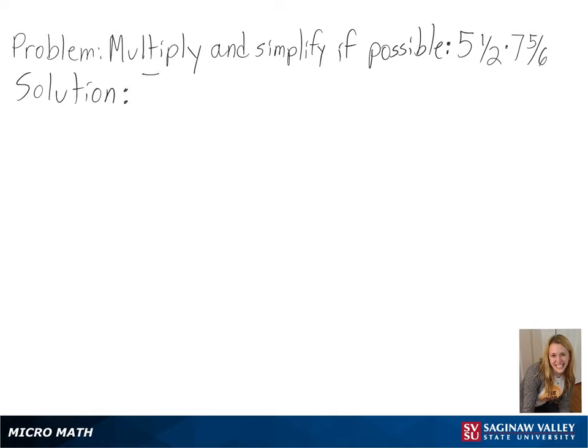Our problem is to multiply and simplify if possible. The first part of our solution is to convert our mixed numbers into fractions so we are able to multiply across.